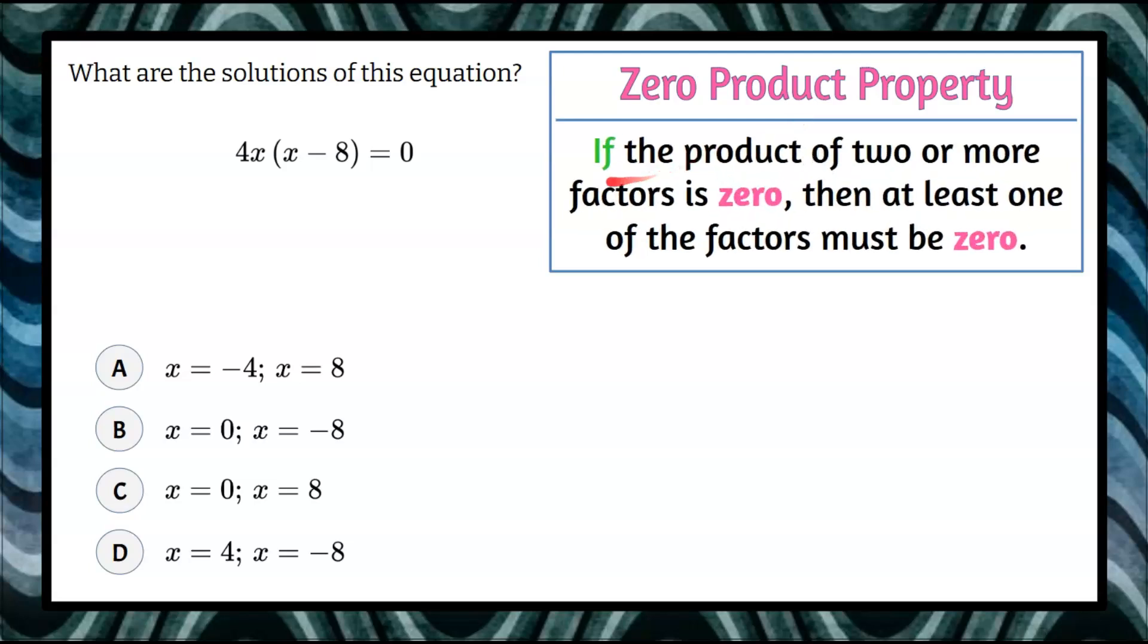The zero product property states if the product of two or more factors is 0, then at least one of the factors must be 0.